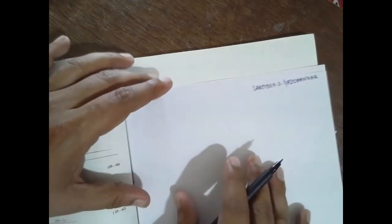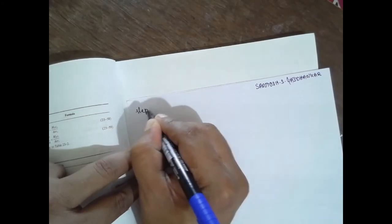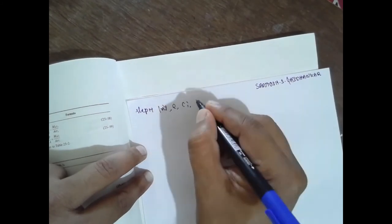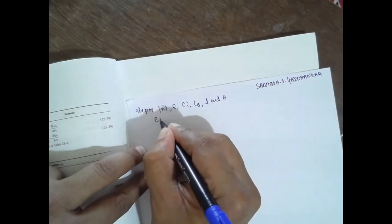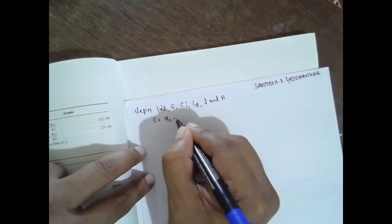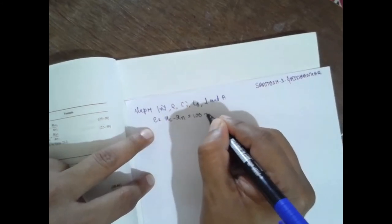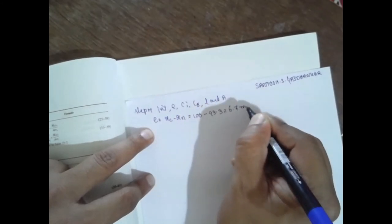Next, you have to find out step 4: finding e, ci, c0, l, and A. e is rc minus rn. rc is 100, rn is 93.3. The answer will be 6.7 mm.